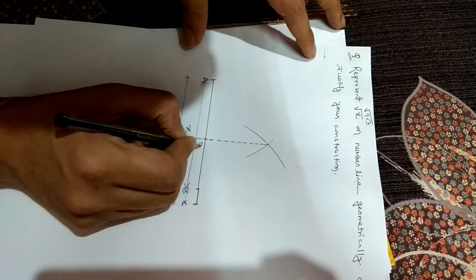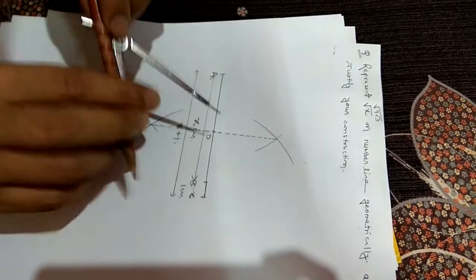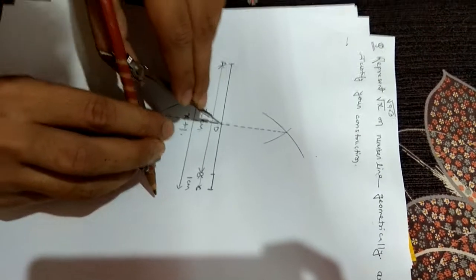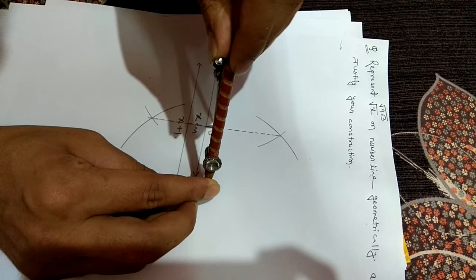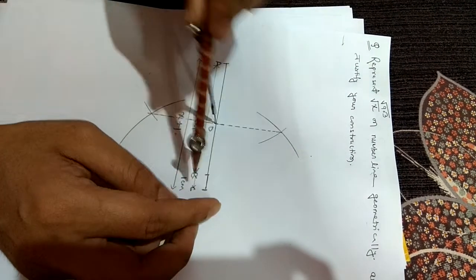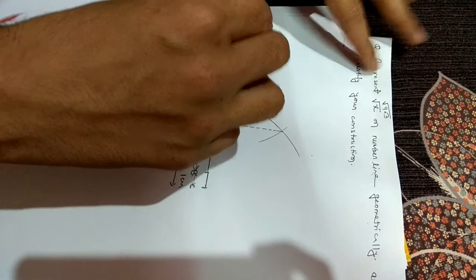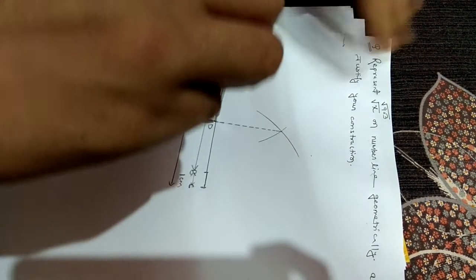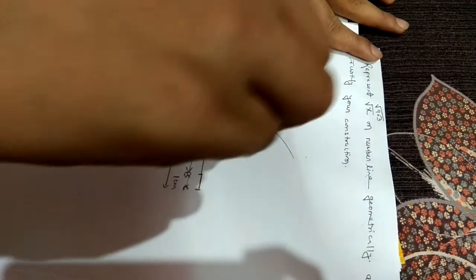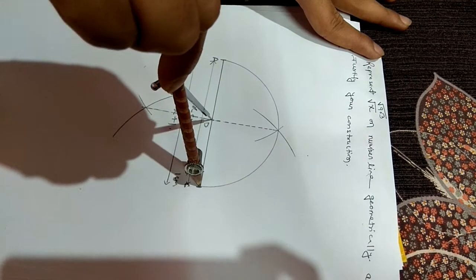Taking D as center and DC or DA as radius, we have to draw a semicircle.